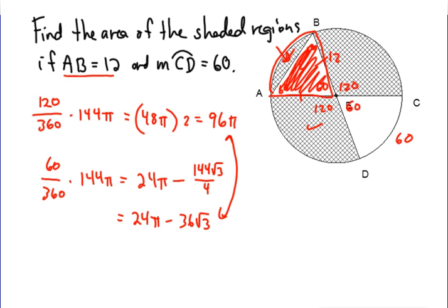And so that's the area of that last segment. Add these together, and you end up with 120π minus 36 square root 3 as your exact answer for the area of the shaded region.